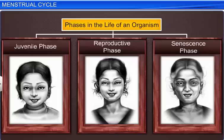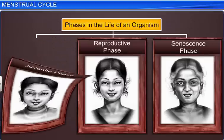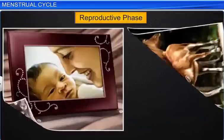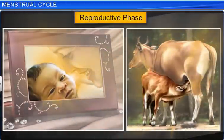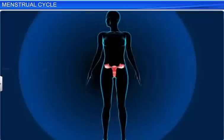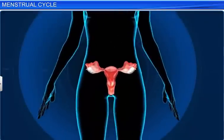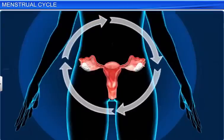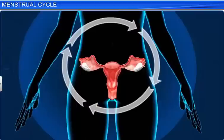There are three phases in the life of a living organism: Juvenile, Reproductive, and Senescence. During the reproductive phase, organisms give birth to offspring. Interestingly, most organisms display certain morphological and physiological changes during the reproductive phase. Human females, for instance, experience the menstrual cycle, which is defined as cyclical changes in the genital system during the reproductive phase.